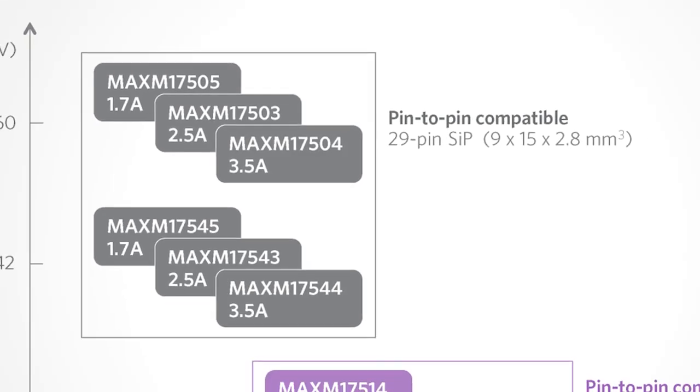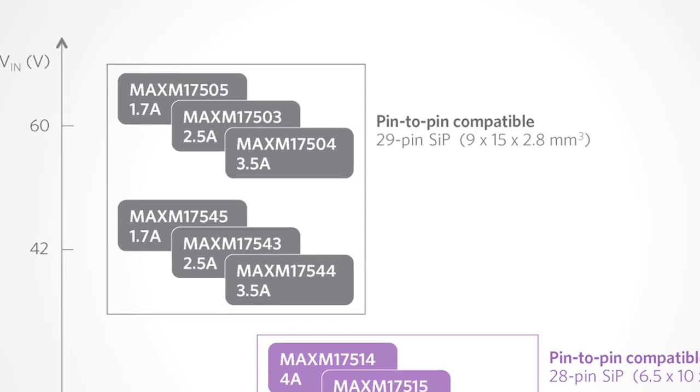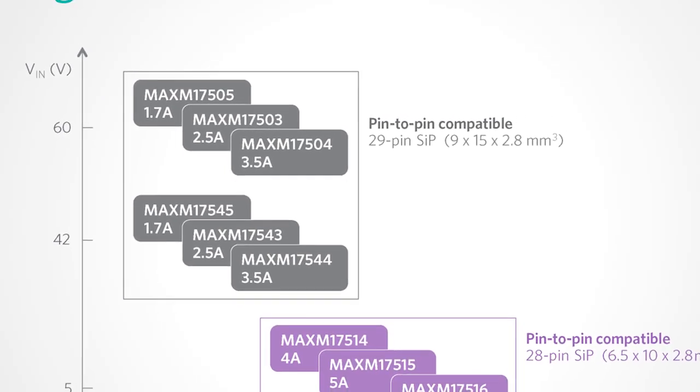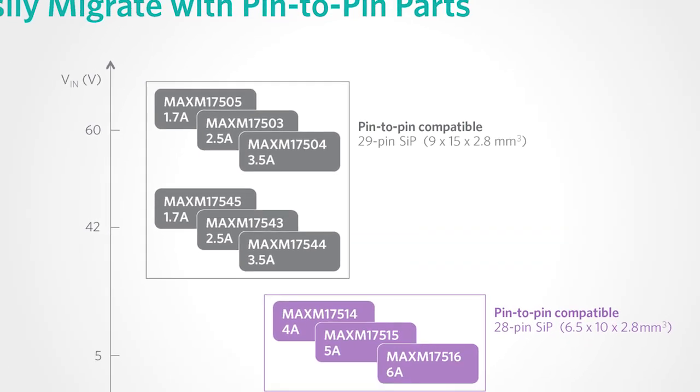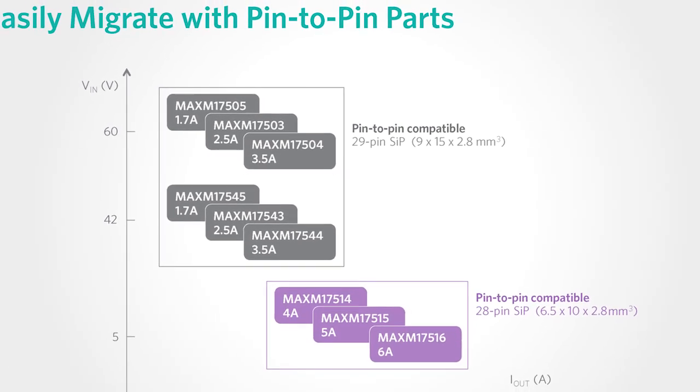So what other differentiators or benefits can customers expect when they use Maxim power supply modules? We started off talking about how power modules should inherently make it easier for the system designers. Well, why is it then that a power supply designer has to just start from scratch every time their power supply requirements change throughout a project? It's ridiculous. So these Himalaya modules, they've been designed from the ground up to be pin-to-pin compatible, meaning that across different input voltages and across different current capabilities, a customer can simply just swap out different modules to achieve their design. Very, very nice feature.